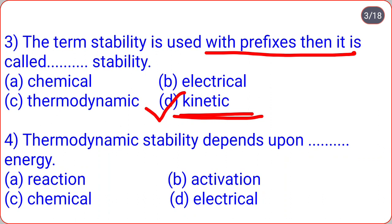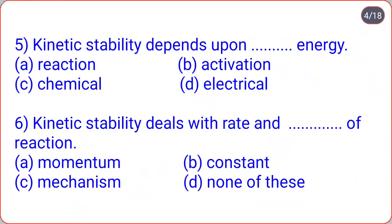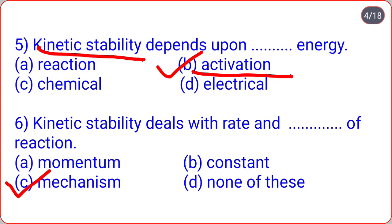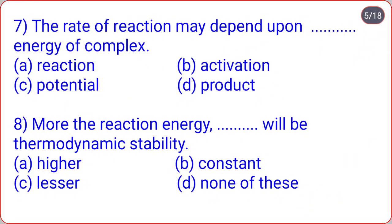Thermodynamic stability depends upon reaction energy, while kinetic stability depends upon activation energy. Kinetic stability deals with the rate and mechanism of reaction — correct option C, mechanism. The rate of reaction may depend upon the activation energy of the complex — correct option B, activation energy.